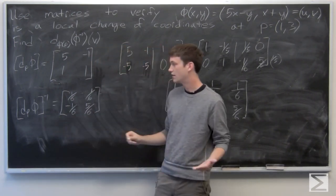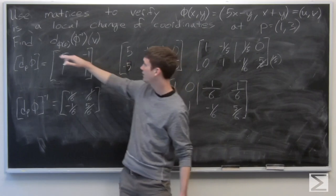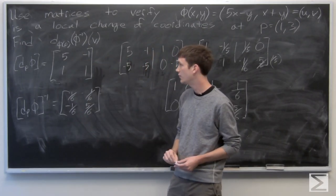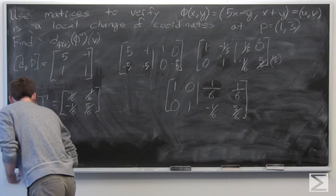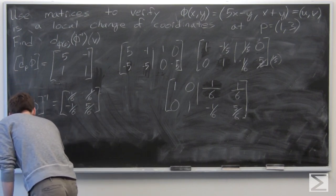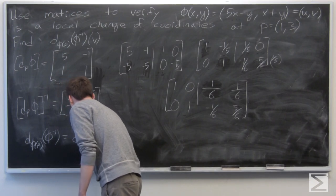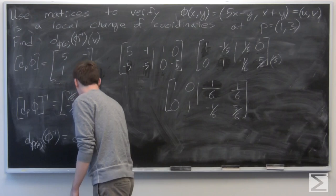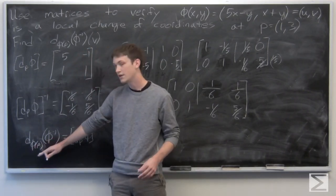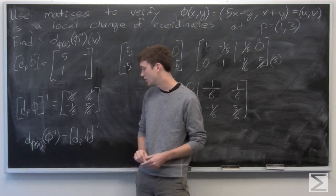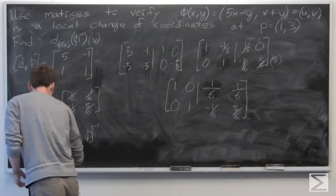On the left side of the augmentation we now have the identity matrix, which tells us that the total derivative of phi at p inverse — that is, D phi(p) inverse — is the matrix [1/6, -1/6; 1/6, 5/6]. Since this inverse exists, we know there is a smooth local change of coordinates at p.